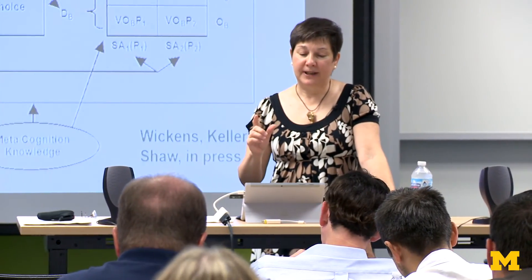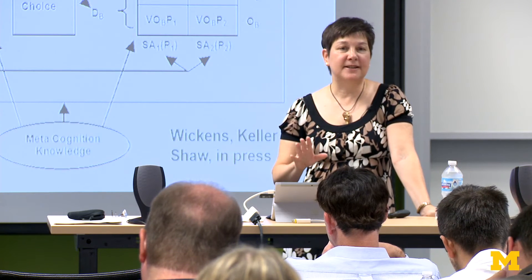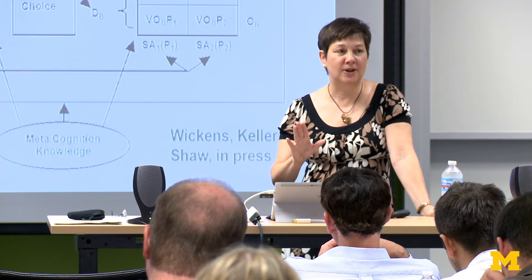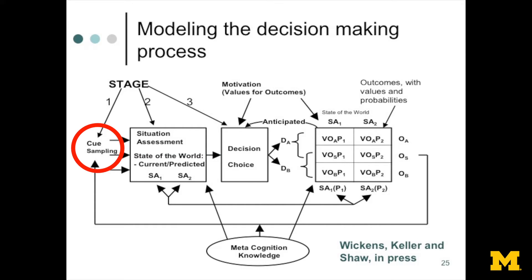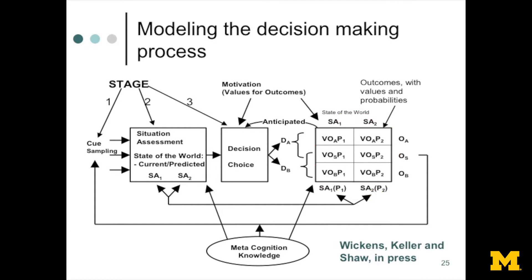I want to talk briefly about a complicated model that Chris Wickens, Keller, and Shaw put together about how we make decisions. It's based on the notion that we're processing information through basically three stages: Q sampling — taking information in from the world — then situation assessment, the comprehension piece, then decision choice — making a choice about what action to take. Each decision has consequences, such as shooting down the plane or not, and that leads to some outcome.